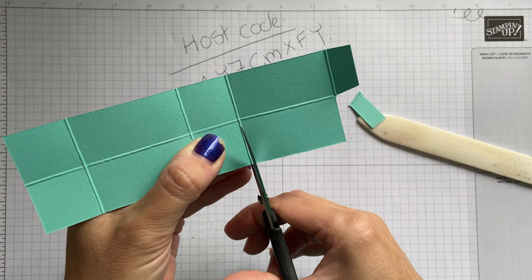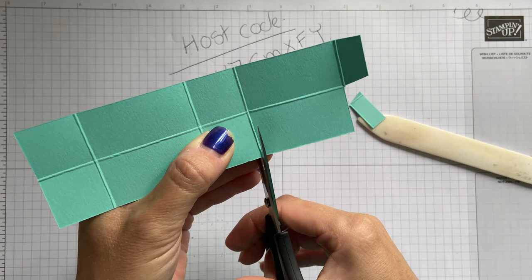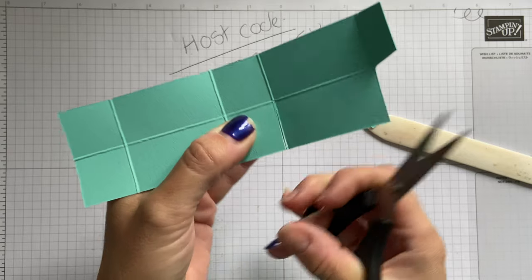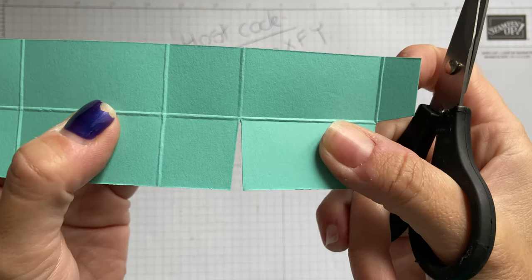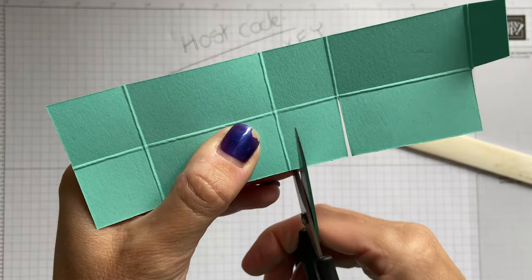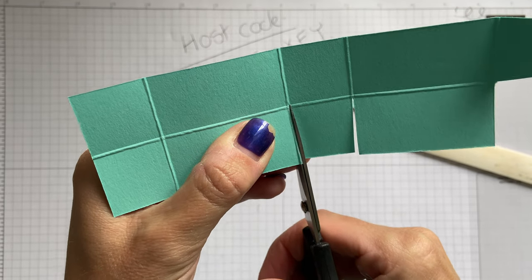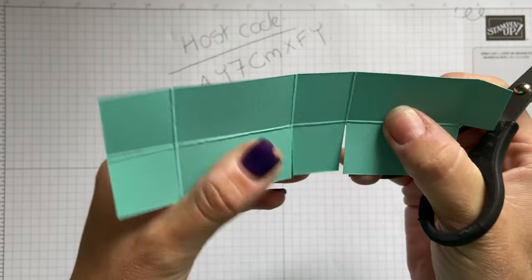And then I just like to cut off the scoreline. So I'm just cutting out that scoreline there. You can see it's a little bit raised. I'm just going to go either side of that and I'm just going to cut that out.